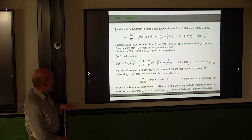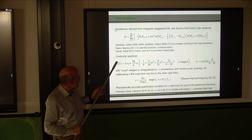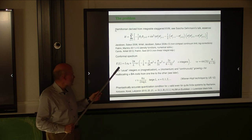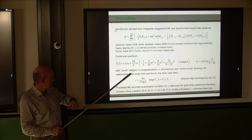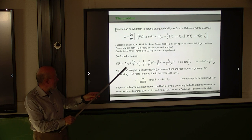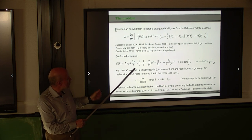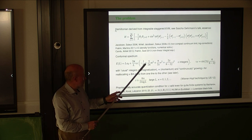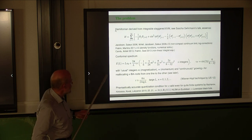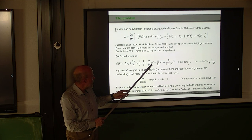Nonlinear integral equations were derived and numerically solved by Candu and Ikhlef in 2013, and by Frahm and Seel the same year. The finding is that we have a conformal spectrum. The energy of any excited state in the lower part of the spectrum consists of a bulk term, and then 2π/L times the velocity times several terms. Minus 1/6 tells us that the central charge is 2.